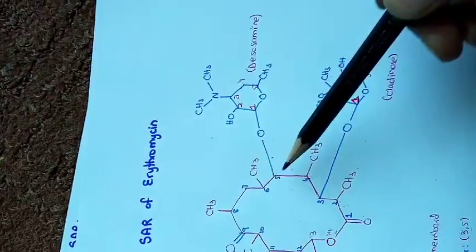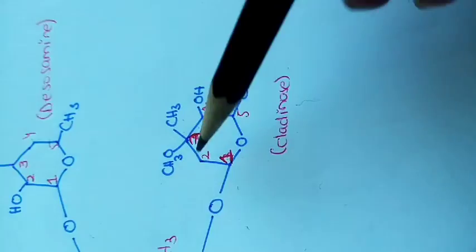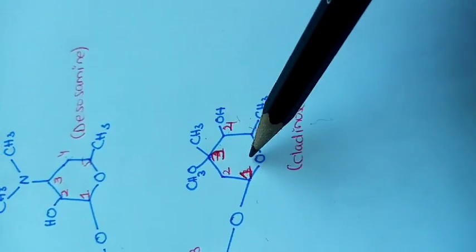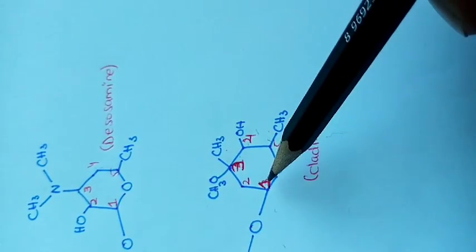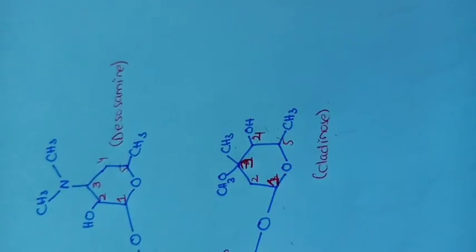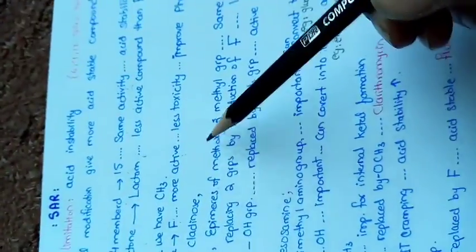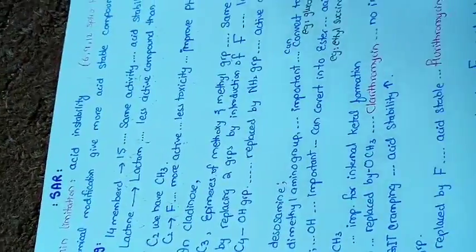At position 3 we have a sugar attached by glycosidic bond, which is cladinose sugar. Cladinose is a six-membered lactone ring containing oxygen. At C3 position it has a methyl group and a methoxy group. The epimers of the methyl and methoxy groups at C3 position have the same activity.